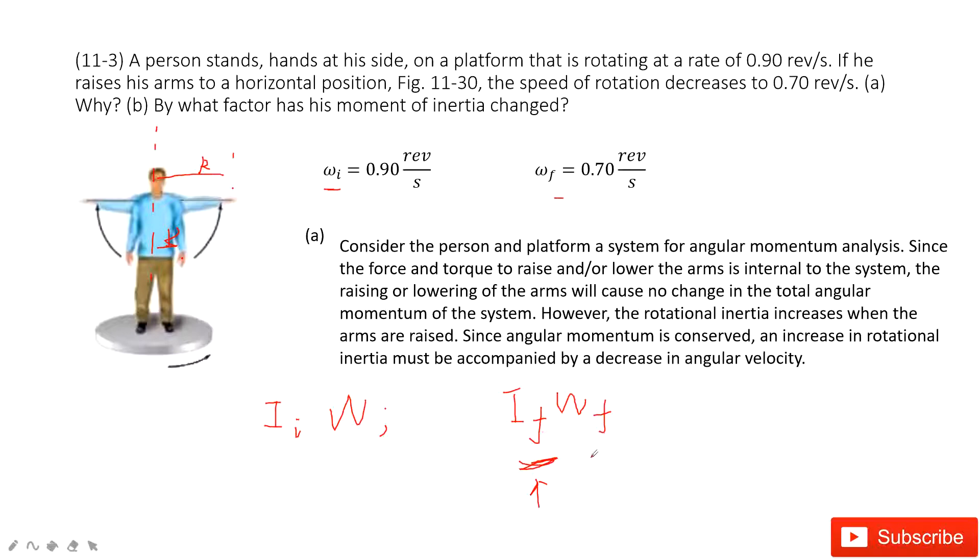And this r increases, because this one led to equal to initial angular momentum. So omega_f, final angular velocity must decrease.